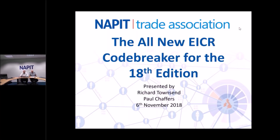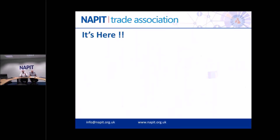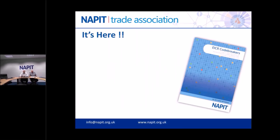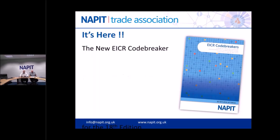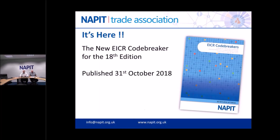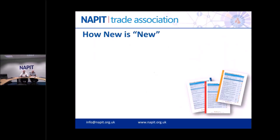We're now going to work through our new Code Breaker, all new for the 18th edition - it's finally here. It's been a lot of hard work to get it ready. It's completely compliant, published on the 31st of October, and complies with BS 7671:2018. We've now got 640 observations and codes, up from about 280 on the previous edition.